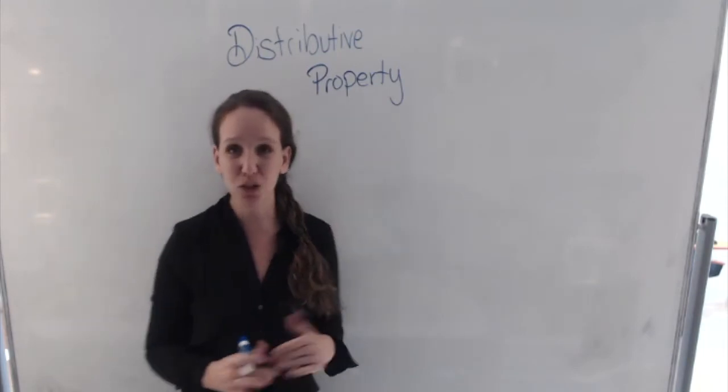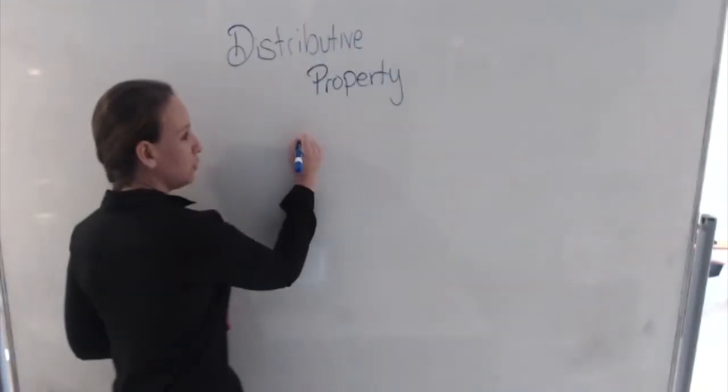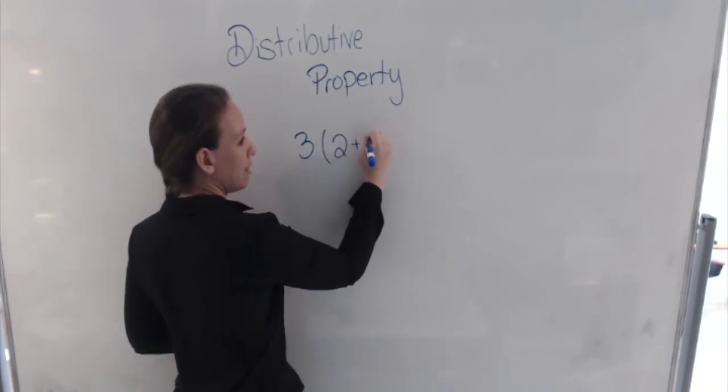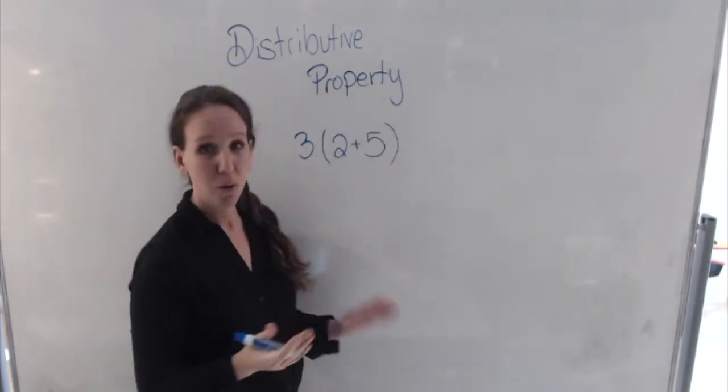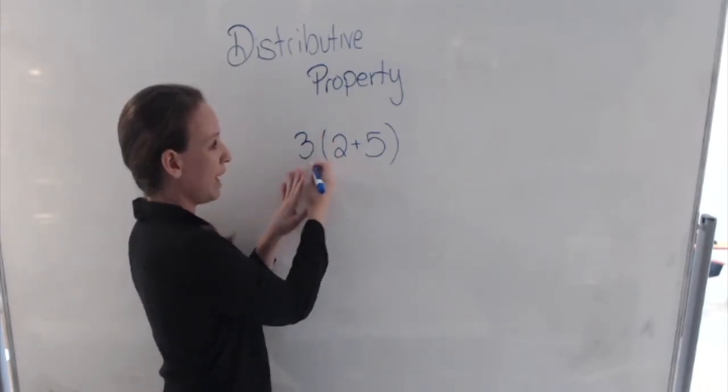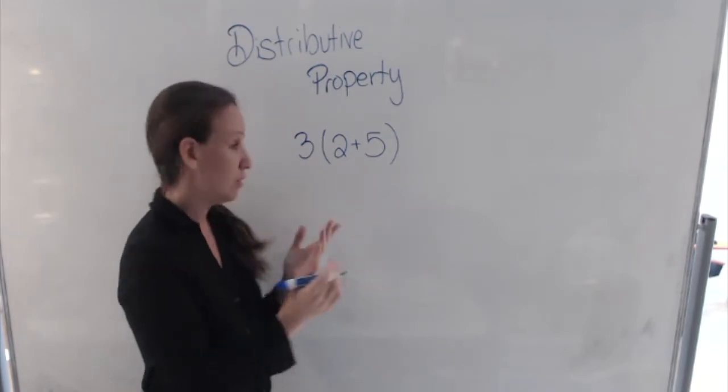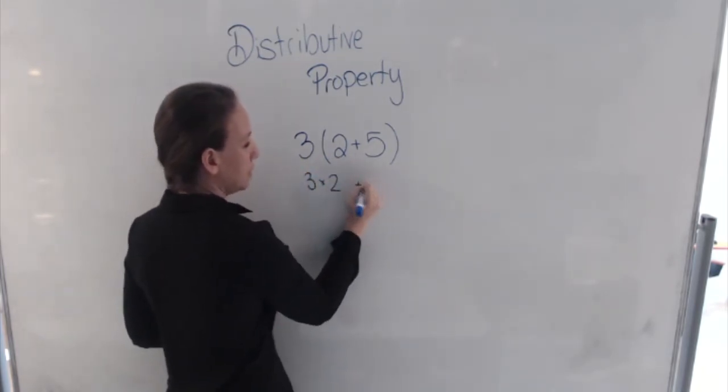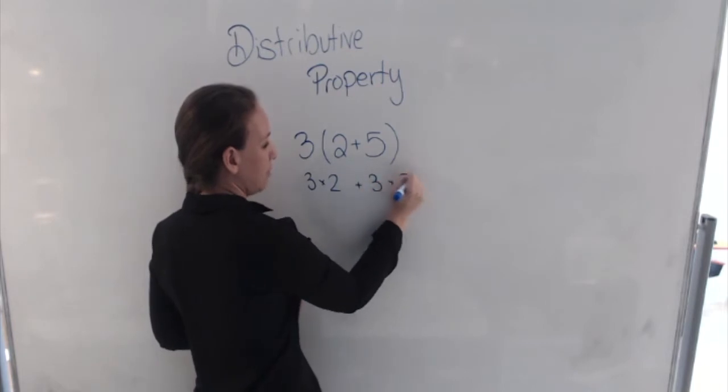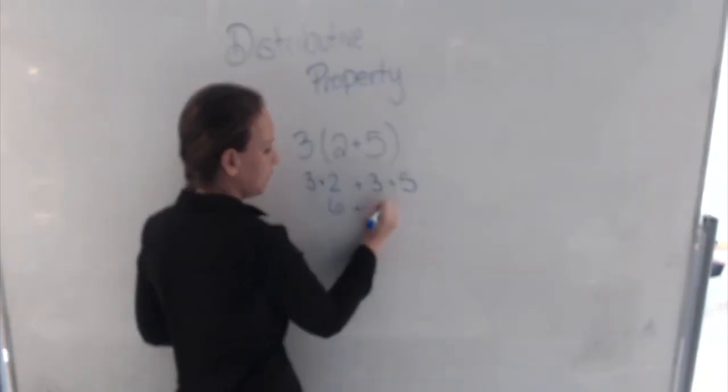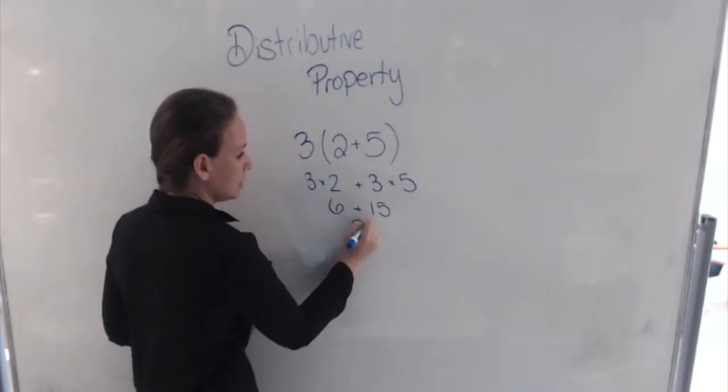So, the idea of distributive property is if I give you something, 3 times 2 plus 5. What this means is I can do 3 times 2 and 3 times 5, which is 3 times 2 plus 3 times 5. So that's 6 plus 15, which is 21.